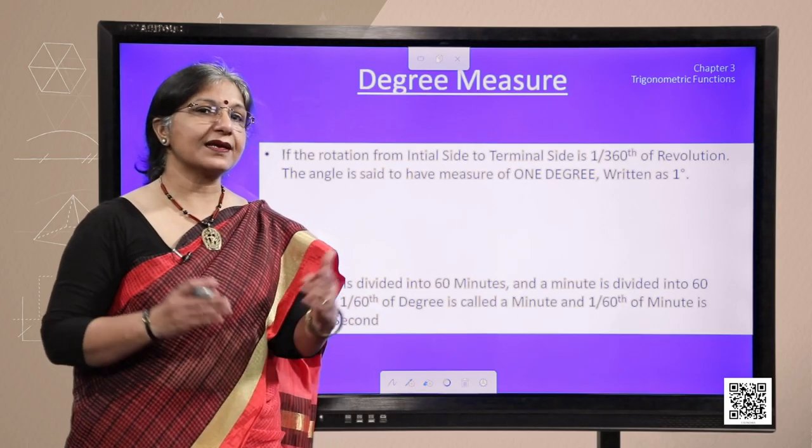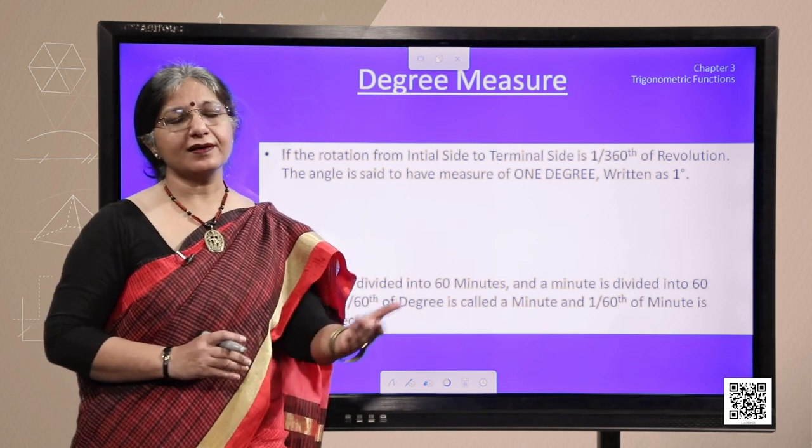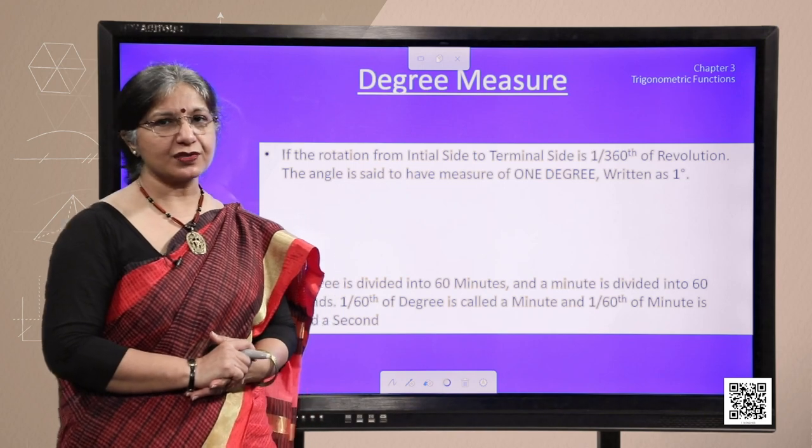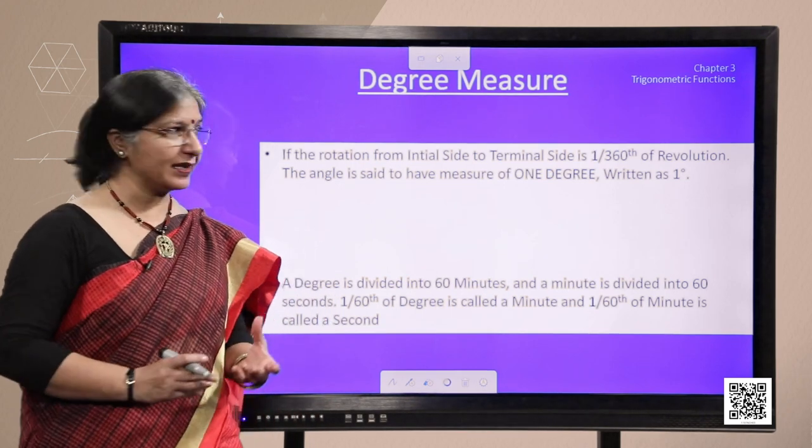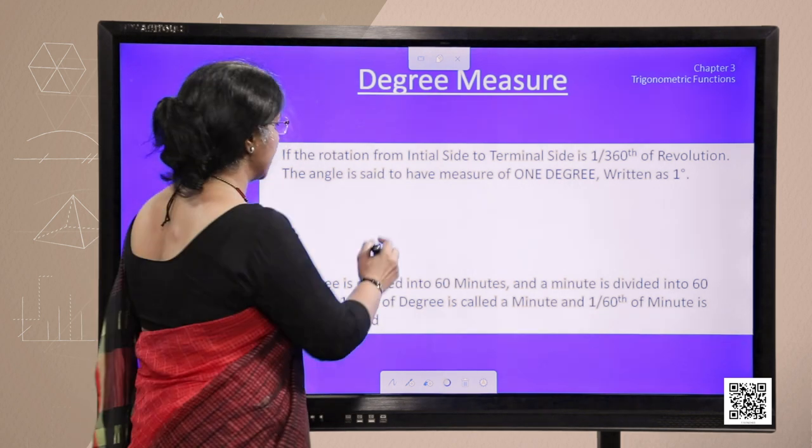Now what is degree measure? You all must have been using degree in your earlier classes for trigonometric ratios but what it is actually? If the rotation from the initial side to the terminal side is 1 upon 360th of a complete revolution, the angle is said to have measure of 1 degree.